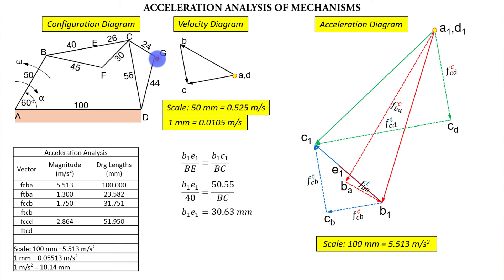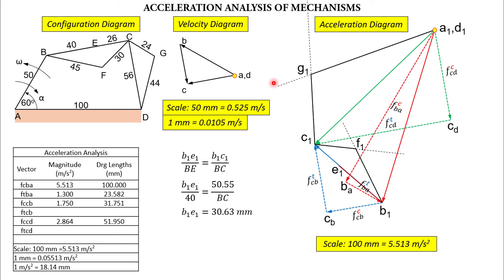Now for points F and G. There are two methods. The first, simpler method uses angle transplanting. Take angle CBF from the configuration diagram — measured starting from CB then to F. That same angle is transplanted into the acceleration diagram at C1B1F1. It's a beautiful animation — the angle from the config diagram is directly applied in the acceleration diagram.